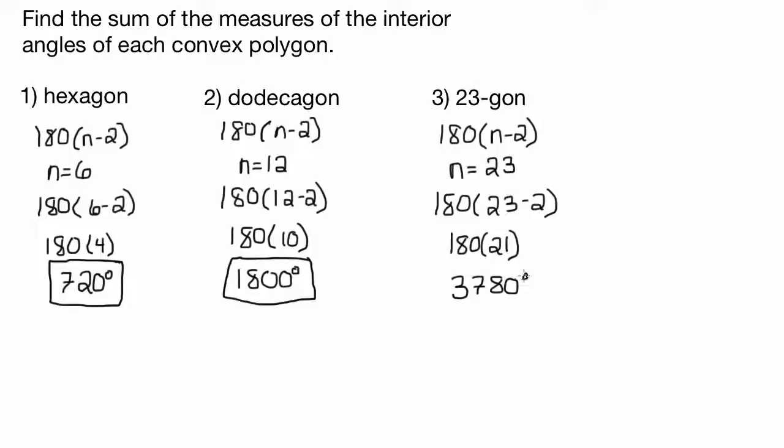Okay, good, let's freeze. There you go. So hexagon, 720. Dodecagon, 1800. 23-gon, 3780.